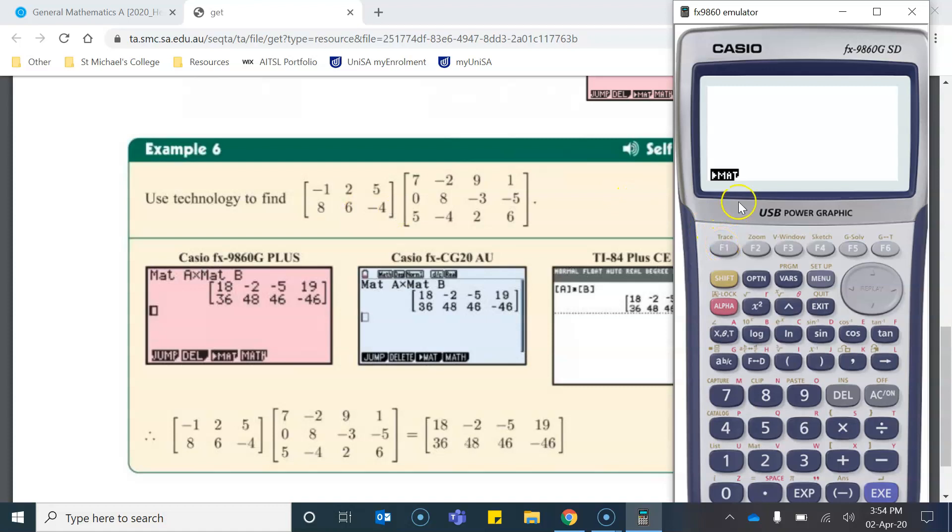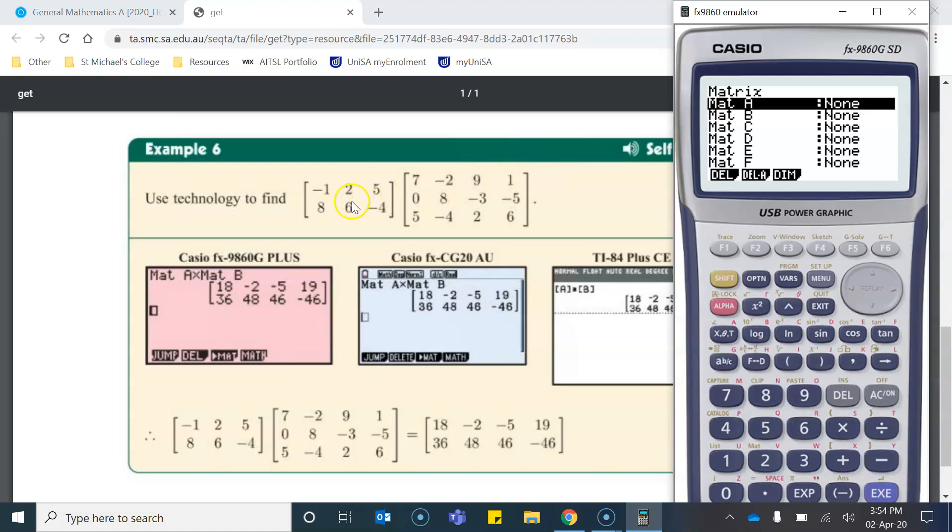Now, what you have to do in your calculator, you'll notice that on the bottom of the screen, there's the letters MAT. That stands for matrix. If I click F1, that brings me into these different matrices. I'm going to first input this matrix here as my matrix A, and then I'll input this matrix as my matrix B.